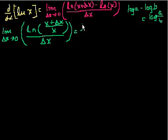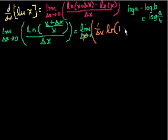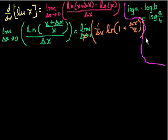So that equals the limit as delta x approaches 0. Let me write the 1 over delta x out in front: 1 over delta x times the natural log of (1 plus delta x over x). Now I'm going to use another logarithm property — remember that a times log(b) is equal to log(b to the a).